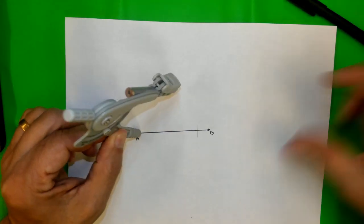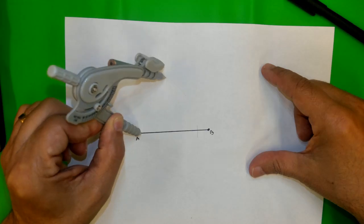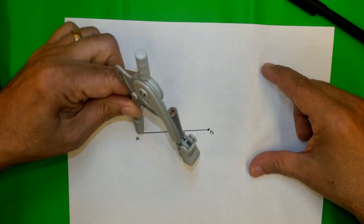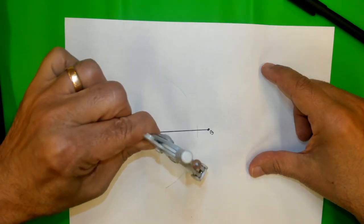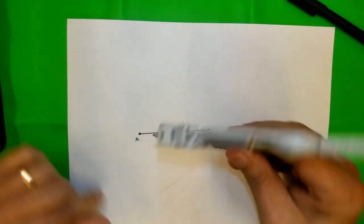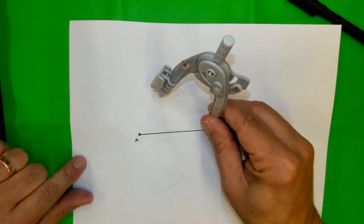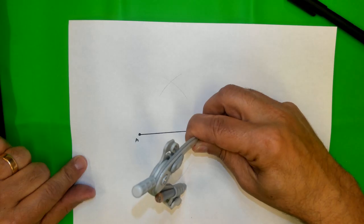But I'm going to draw an arc here, long enough, another arc down here. Very similar, I'm going to move the compass on the other endpoint B and draw two arcs, one up above the segment, one low under the segment.